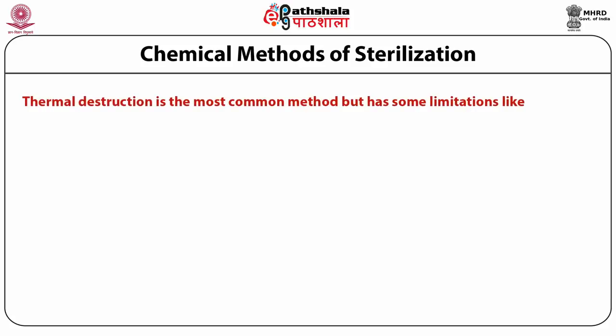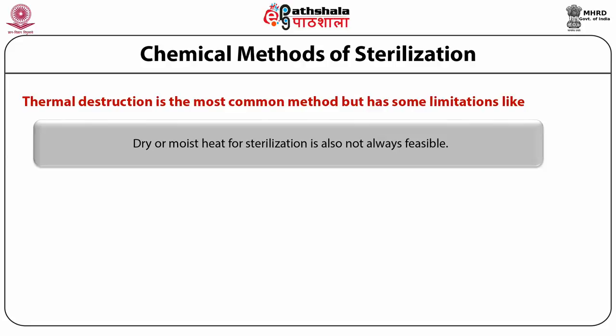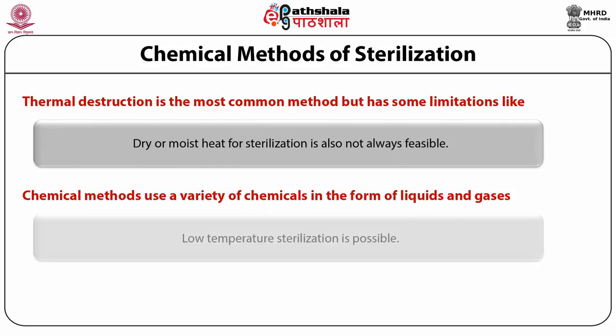Thermal destruction is by far the most common and efficient mode of sterilization. However, dry or moist heat for sterilization is not always feasible. Chemical methods use a wide variety of chemicals in the form of liquids and gases to disinfect and sterilize equipment and packaging materials. Mostly, low-temperature sterilization is possible with chemical methods.